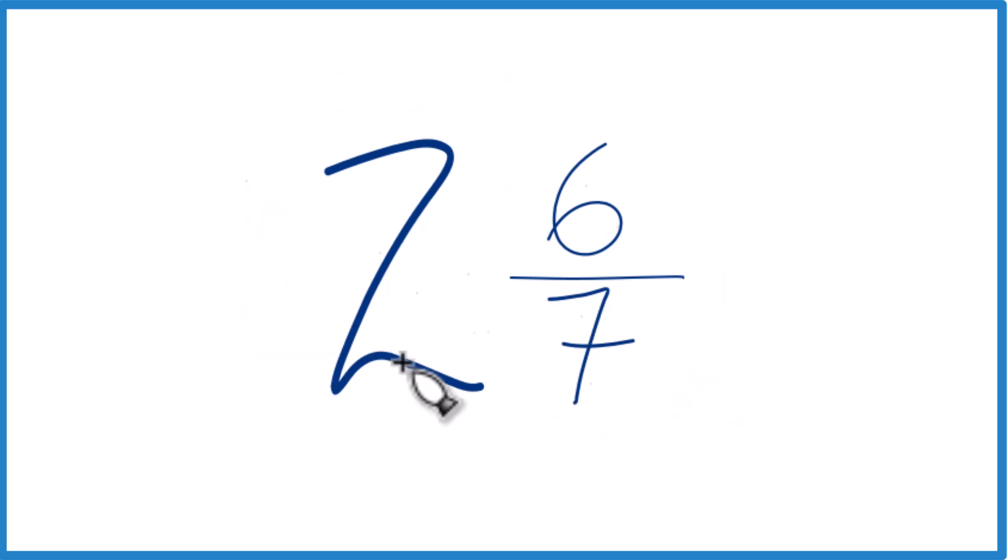You take the whole number, 2, multiply that by the 7. 2 times 7 is 14. 14 plus 6, that equals 20.